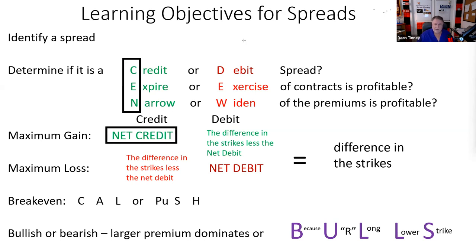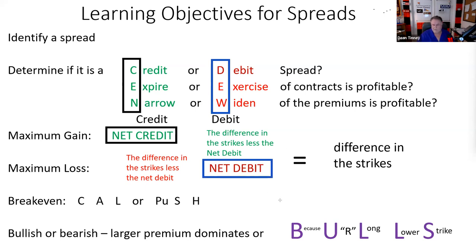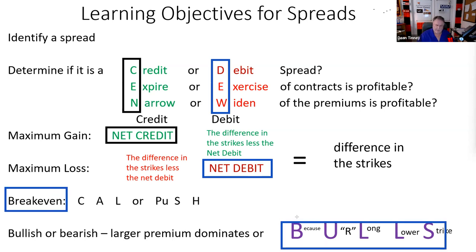Whenever you have money out, you should know that's your loss. We're going to do these eight things on spreads: break-even, max gain, max loss, debit or credit, expire or exercise, narrow or widen, and bullish or bearish. I have a trick to determine bullish or bearish as well. All right, let's leg into our first spread.